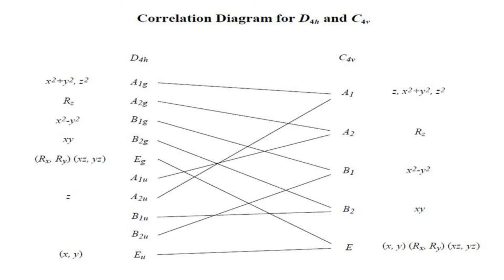The symmetry functions are also correlated: Eg represents Rx, Ry as a doublet, as well as xz and yz as a doublet. These correlate to E of C4v. The E of C4v represents all those doublets — Rx, Ry, xz, yz, and xy. This is the understanding of correlations of the subgroup with the help of a correlation diagram.